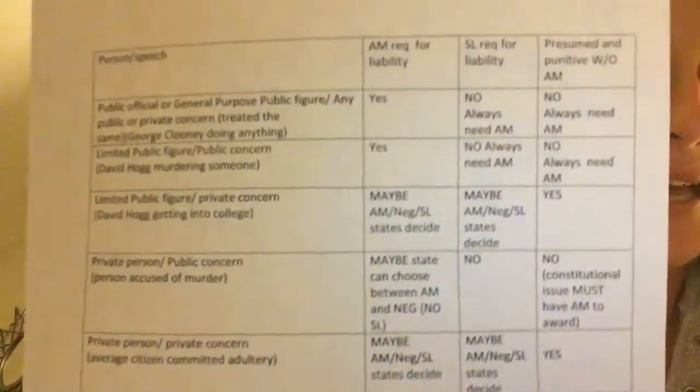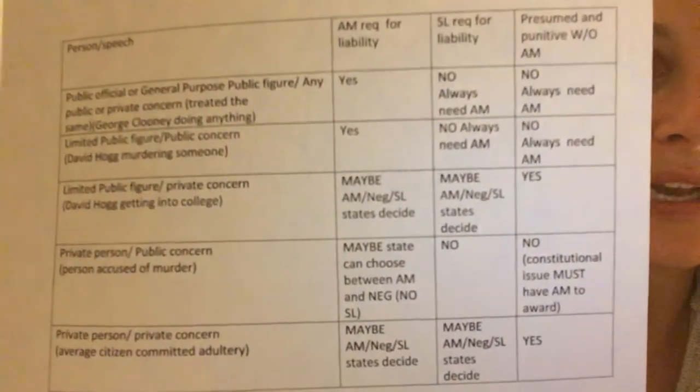On the exam, ask: who is the person — are they a public official, a general public figure, a limited public figure, or a private citizen? Then ask: what kind of speech was involved — public or private concern? Then follow the test. There's a chart available — put in the comments, DM, text, or see me at school to get it.